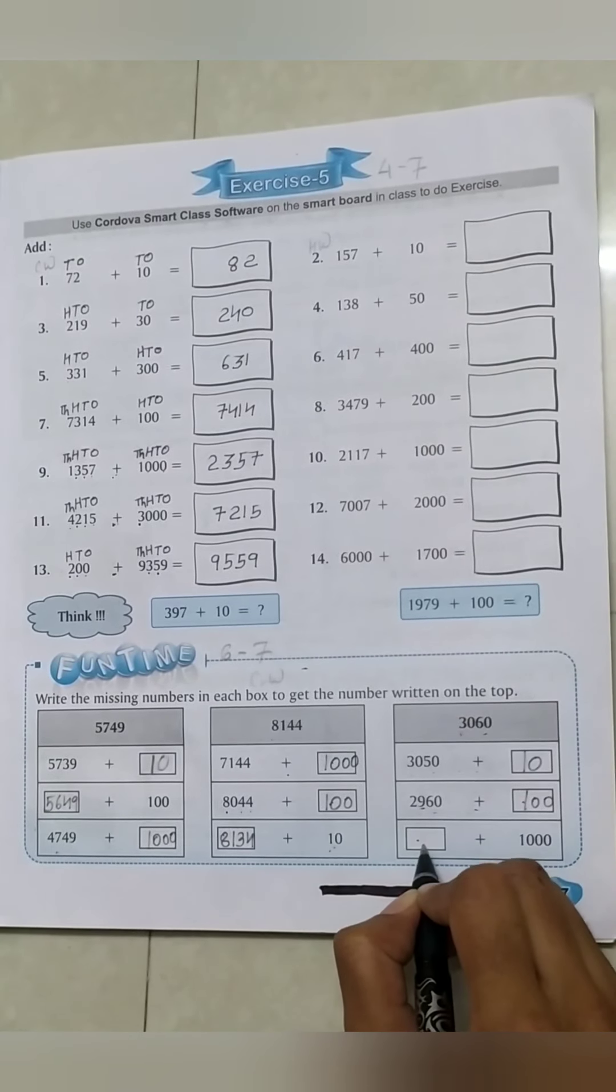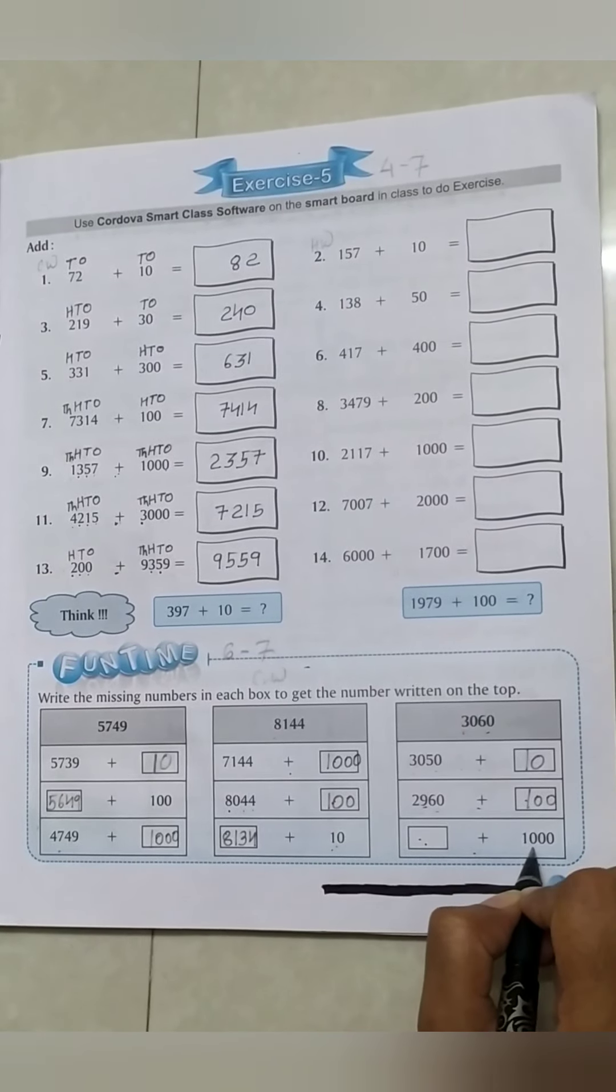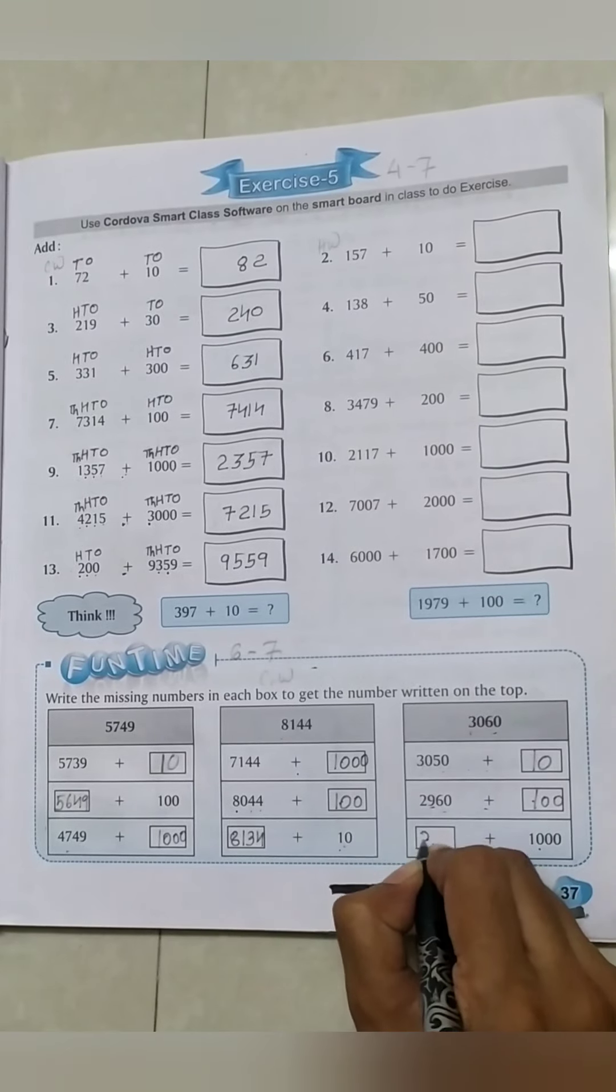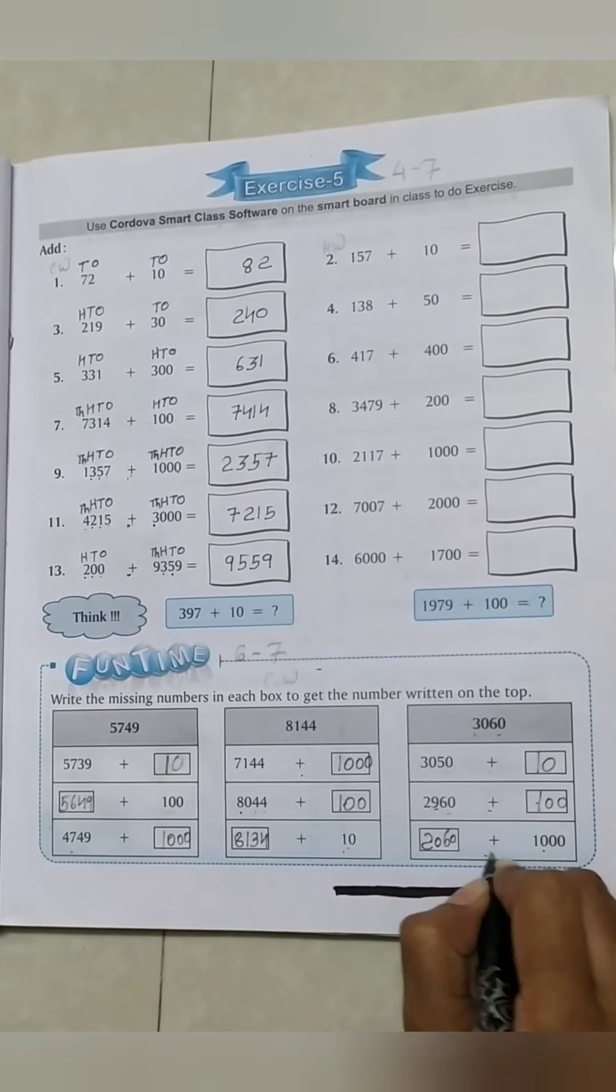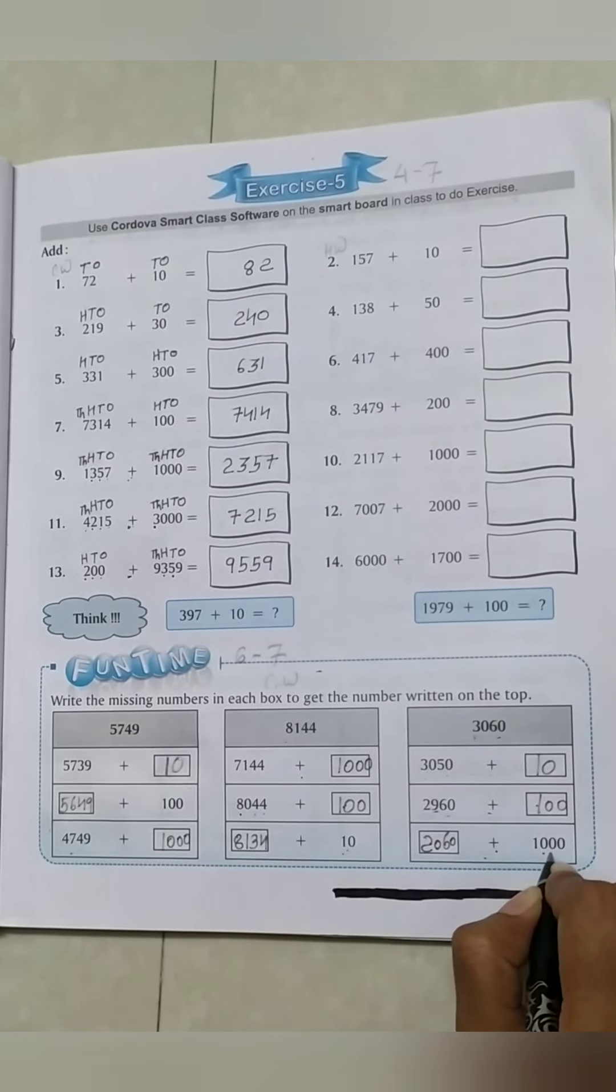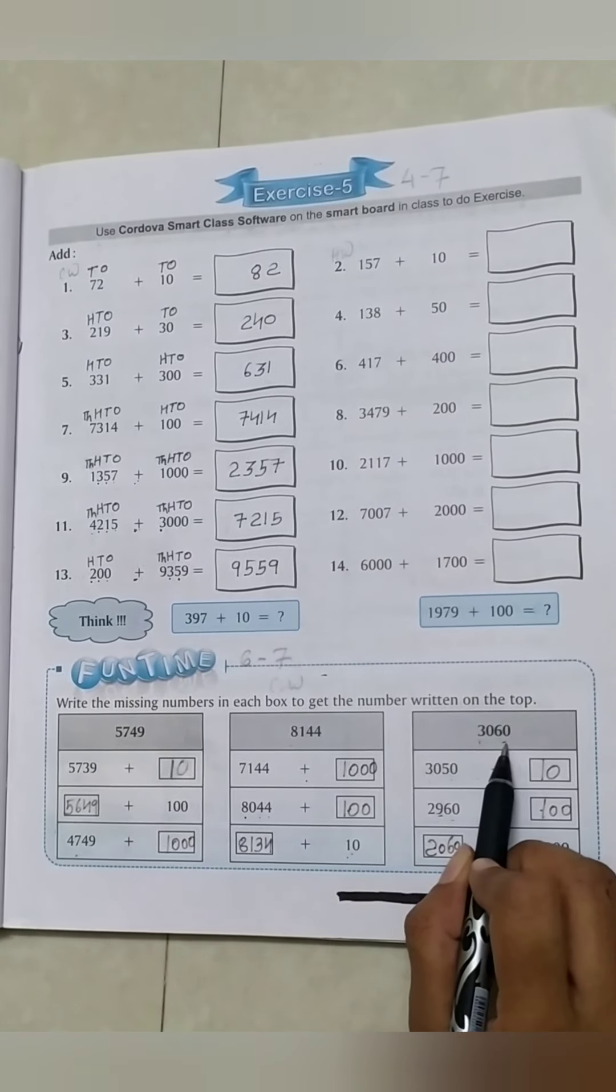Blank No. 3: blank plus 1000. This is 2060 plus 1000 equals 3060.